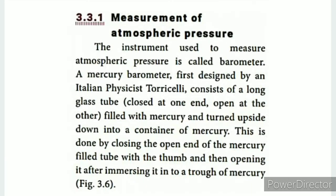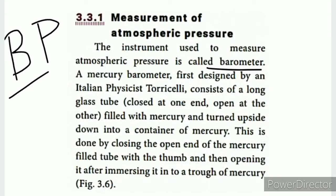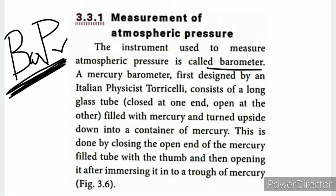Measurement of atmospheric pressure: we can measure atmospheric pressure using an instrument called a barometer. The mercury barometer was first designed by Italian physicist Torricelli. It consists of a glass tube closed at one end and open at the other, filled with mercury, and turned upside down into a container of mercury.